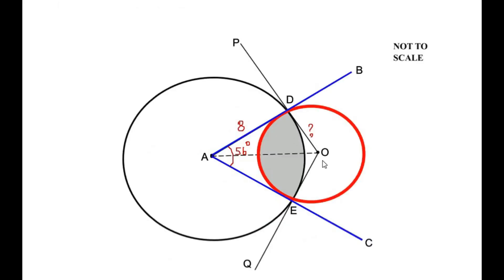OD and OE are the two radii of the circle with center O, and AB is a tangent. Using the radius-tangent theorem, angle ADO is 90 degrees. Similarly, angle AEO is 90 degrees. According to the two-tangent theorem, the angle between the two tangents is bisected by the line from the external point to the center, so 56 degrees splits as 28 degrees and 28 degrees.